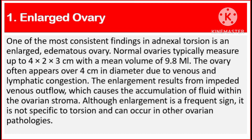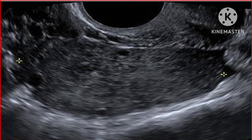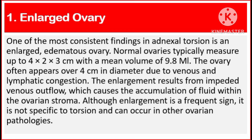Number 1: Enlarged ovary. One of the most consistent findings in adnexal torsion is an enlarged, edematous ovary. Normal ovaries typically measure up to 4×2×3 centimeters with a mean volume of 9.8 milliliters. The ovary often appears over 4 centimeters in diameter due to venous and lymphatic congestion. The enlargement results from impeded venous outflow, causing fluid accumulation within the ovarian stroma. Although enlargement is a frequent sign, it is not specific to torsion and can occur in other ovarian pathologies.